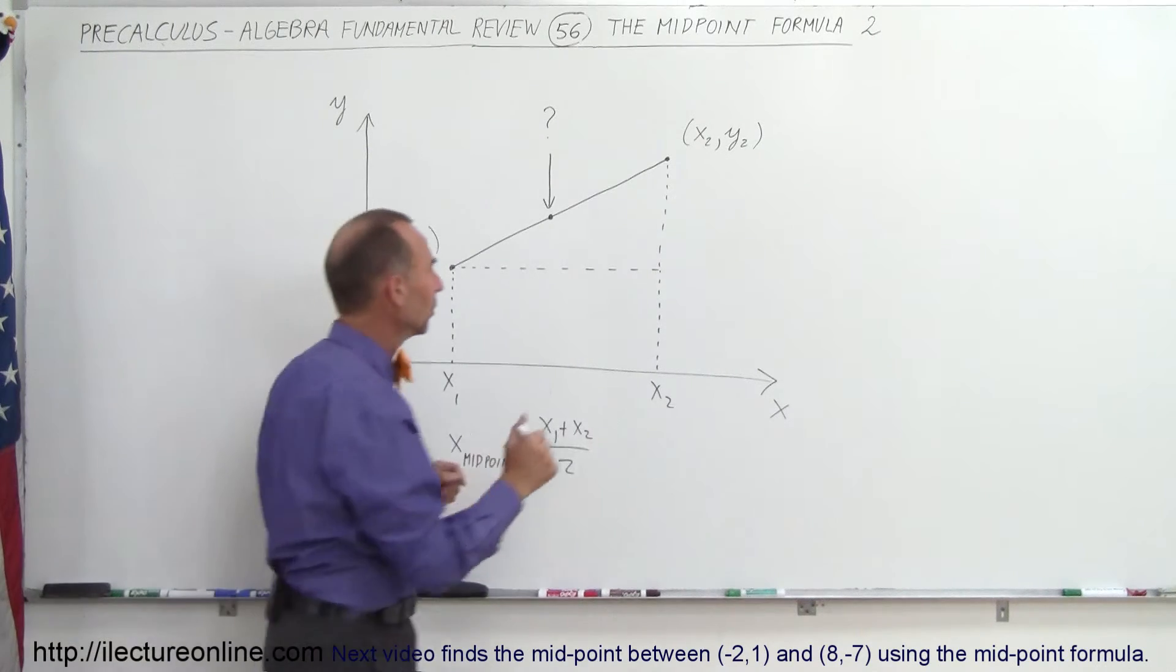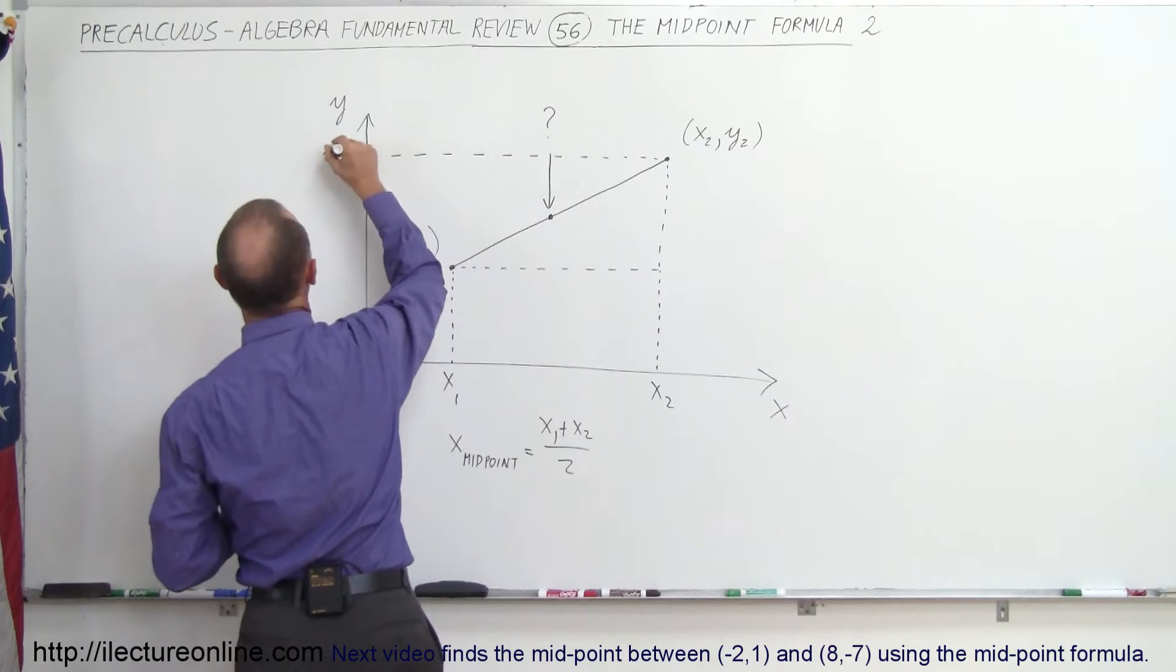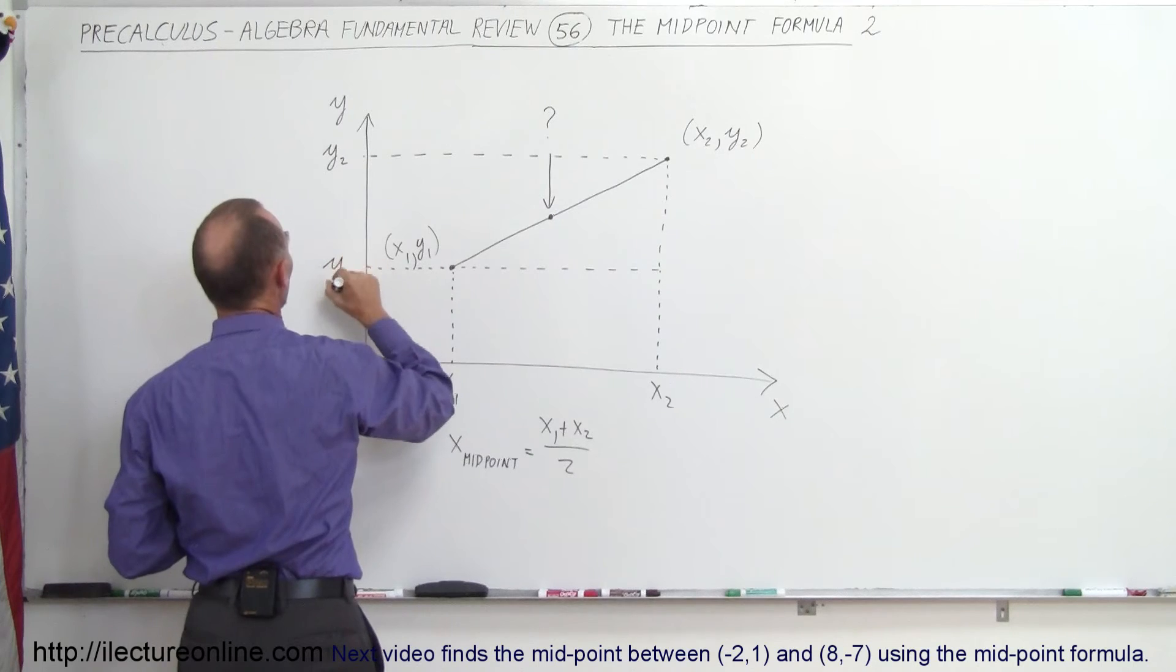Now, doing the same for the Y coordinate, we can say, all right, let's bring this point over here on the Y-axis, and this is then called Y2, and let's bring this point across here, and this is Y1.